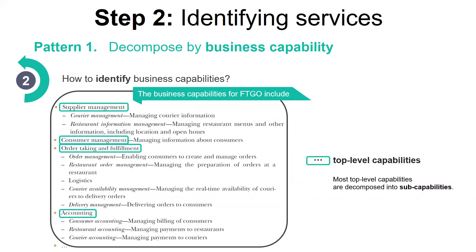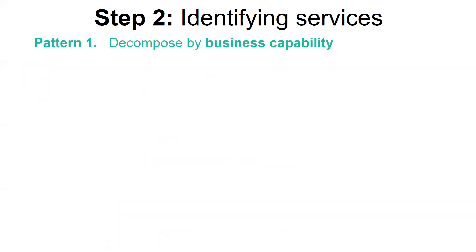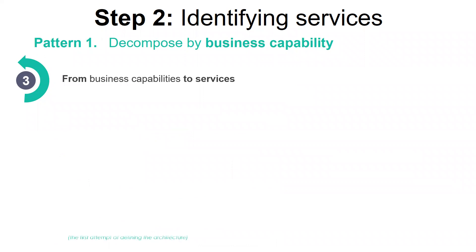Most of these top-level capabilities are decomposed into sub-capabilities. For example, supplier management is decomposed into courier management and restaurant information management. One interesting aspect of the food-to-go capability hierarchy is that there are three restaurant-related capabilities: restaurant information management, restaurant order management, and restaurant accounting. That is because they represent three very different aspects of restaurant operations. Now let's look at how to use these business capabilities to define services, using the food-to-go application to illustrate that.